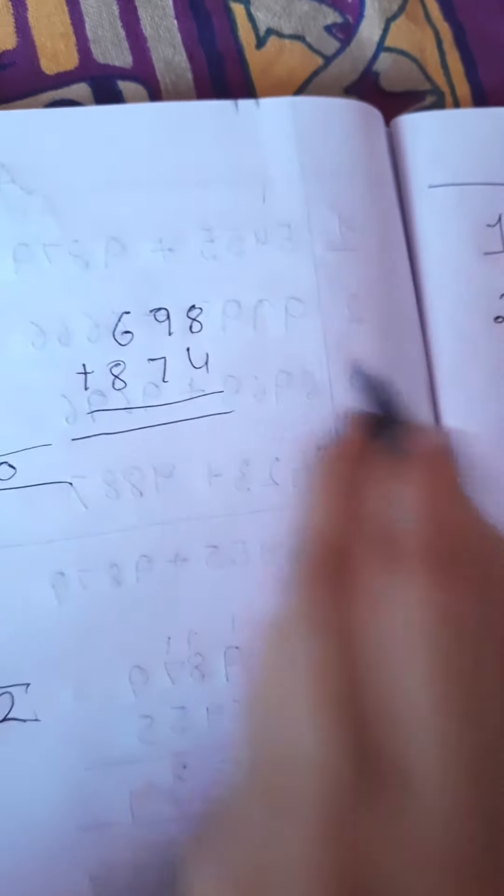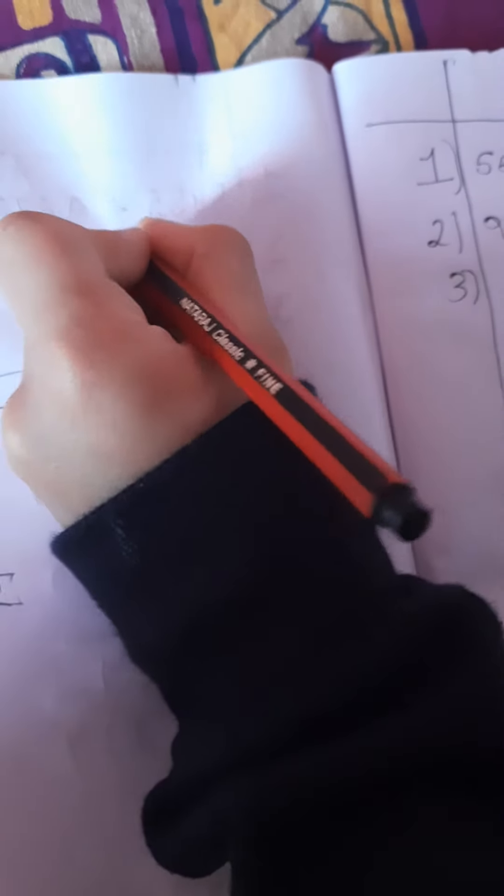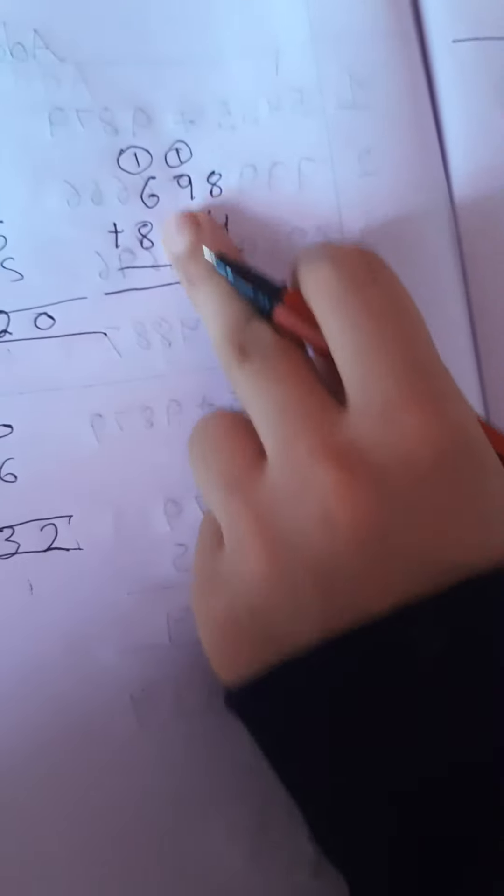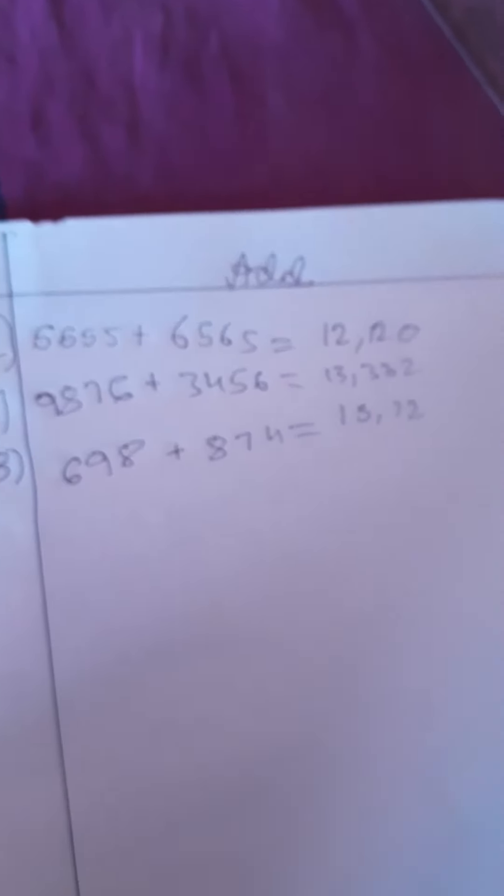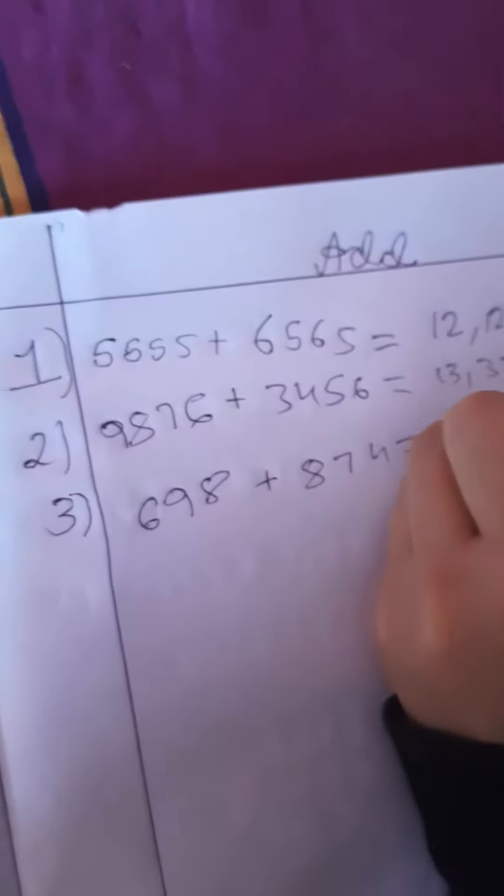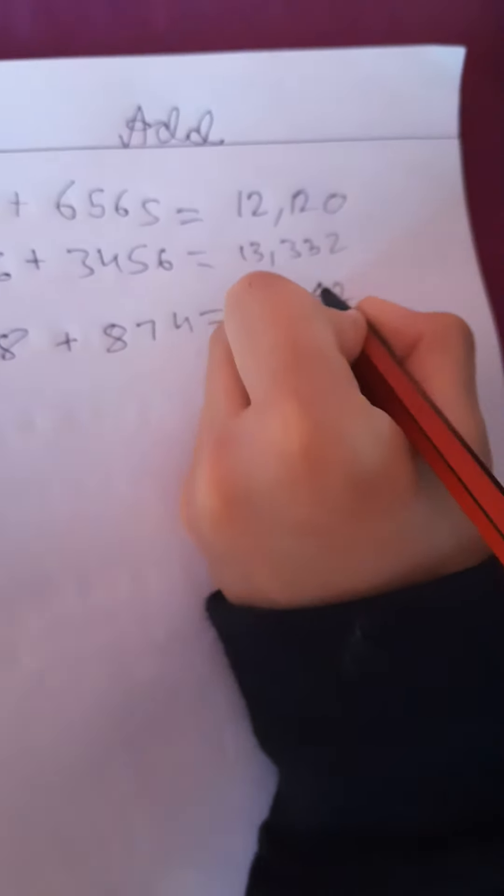It equals to 8 plus 4 is 12. And by the way, 9 plus 1 is 10, 10 plus 7 is 17, it is 7. 7 plus 8, it is 15. So here it is 1,572. Wait a second, I just come with you, it is one, you figure this, comment down below.